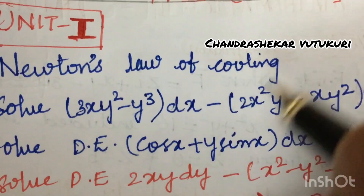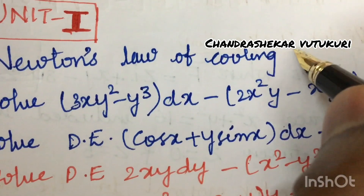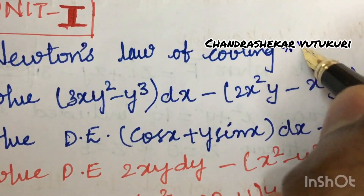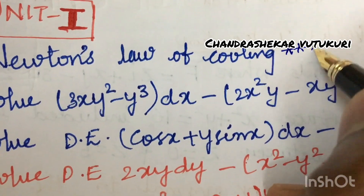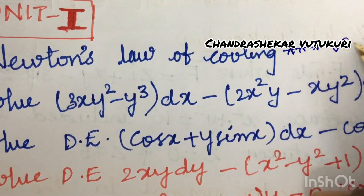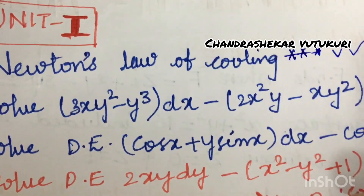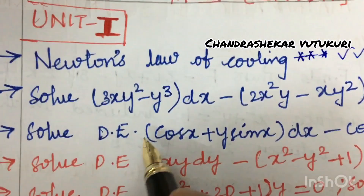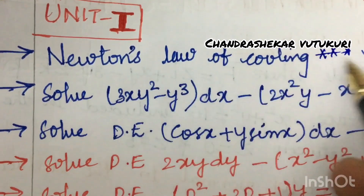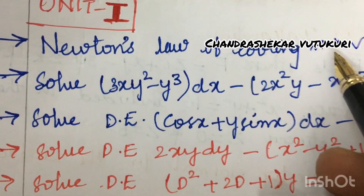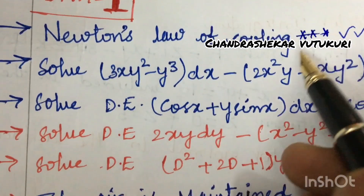The first and foremost compulsory gunshot question is all related to Newton's Law of Cooling. It is being asked several times and is a repeated question expected this time for either 7 or 8 marks.